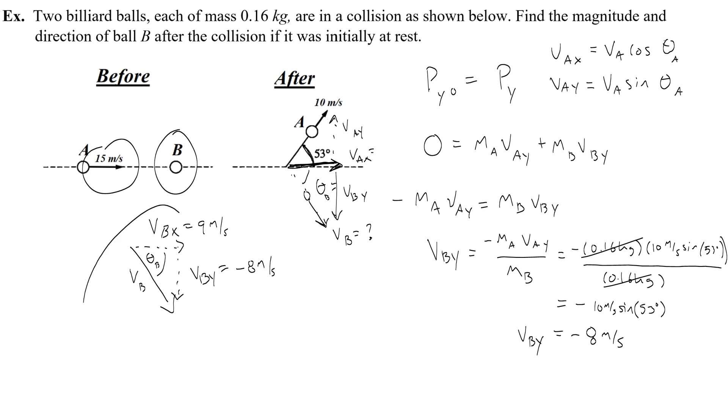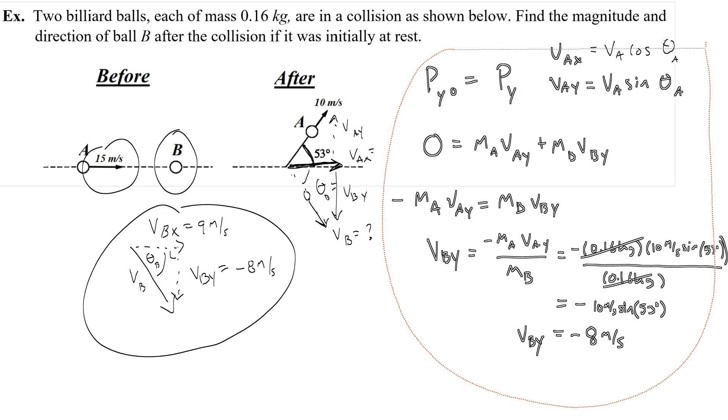Okay so now that I know what the velocities are, I can put them back together to figure out what the magnitude of vb is because it's basically the hypotenuse of this right triangle. And the same thing for finding the angle.